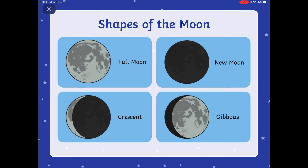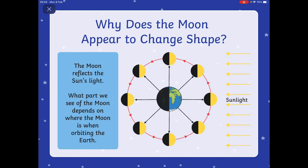Now I must admit, children, gibbous is a new one on me. It's sort of the opposite of the crescent. So we've got the crescent there where you can only see a little bit of the moon, and then the gibbous where you can see most but not all of the moon.